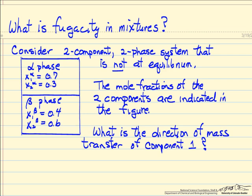Consider two phases: an alpha phase and a beta phase. The mole fractions of component one and two — it's a binary mixture — in the alpha phase and the beta phase are given, and the mole fractions are different. The question is, since this system is assumed to not be at equilibrium, what is the direction of mass transfer?